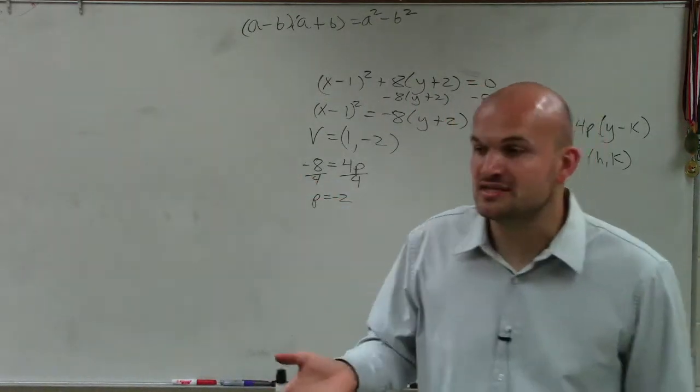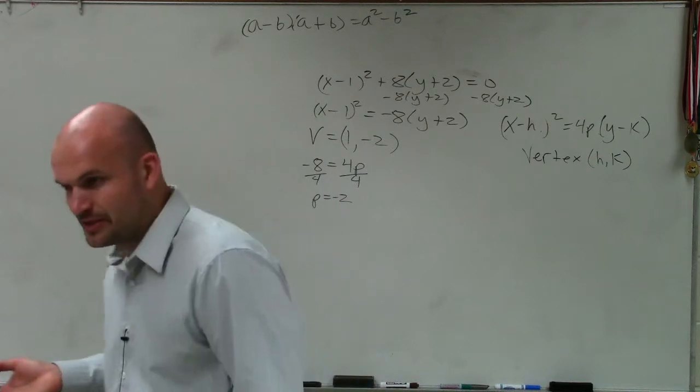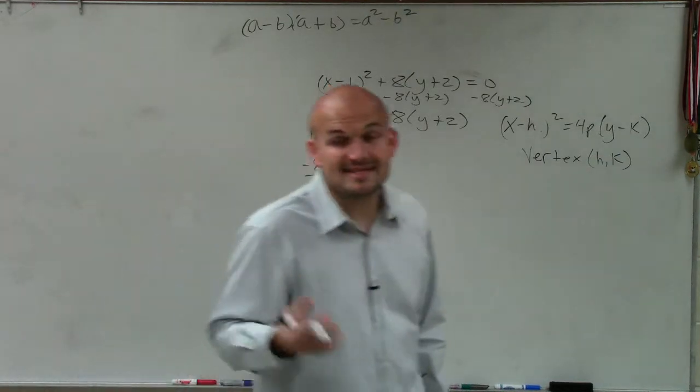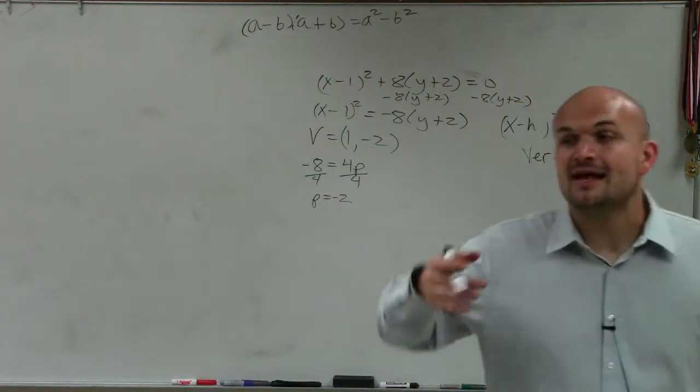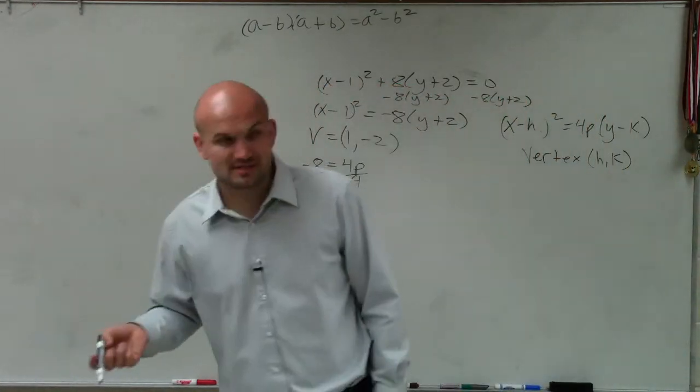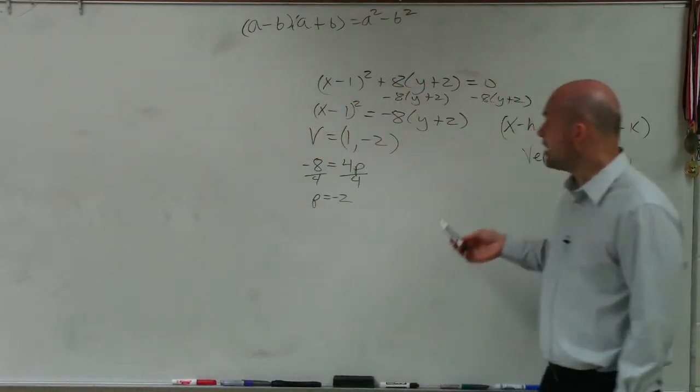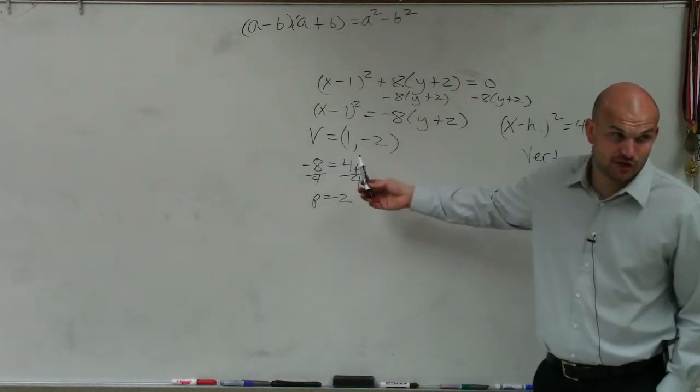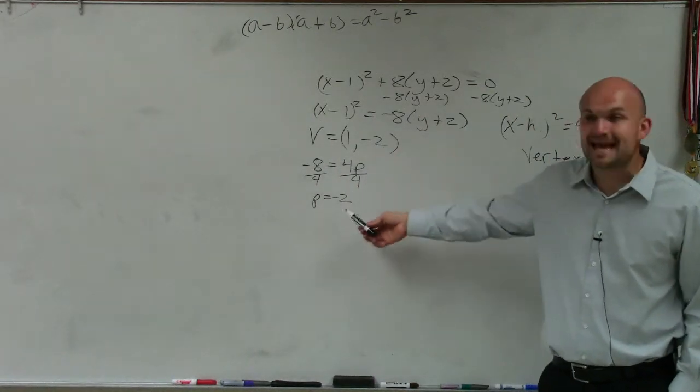Michael, do you remember what that p represented? The distance between the vertex and the focus. And Miranda, you weren't here last class. So make sure you write that down nice and big and you remember it, that p is the distance from the vertex to the focus. So our distance from our vertex, which is at 1, negative 2, to the focus is negative 2.